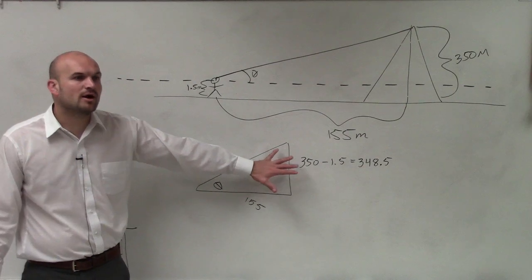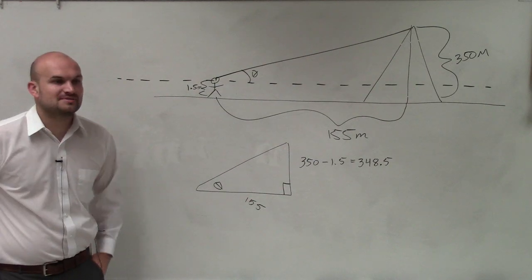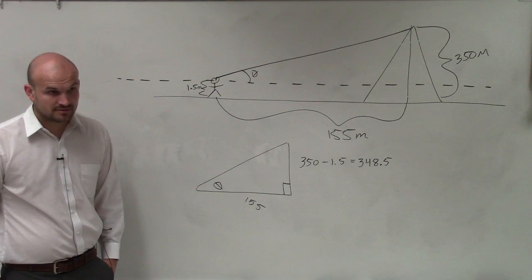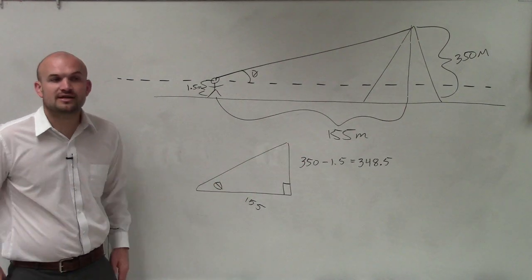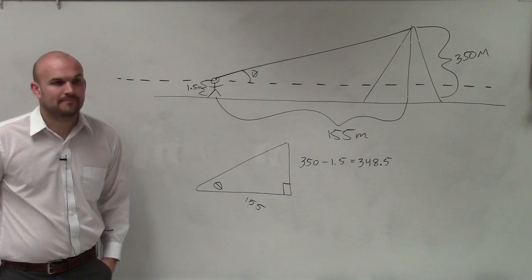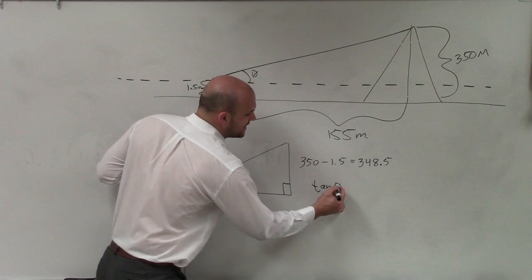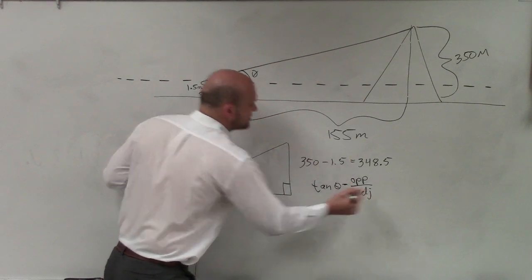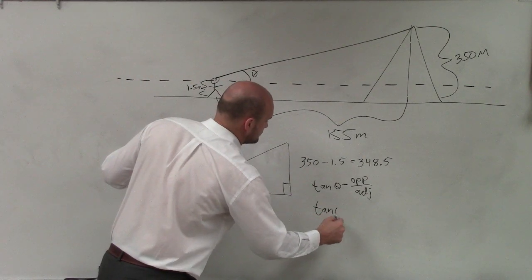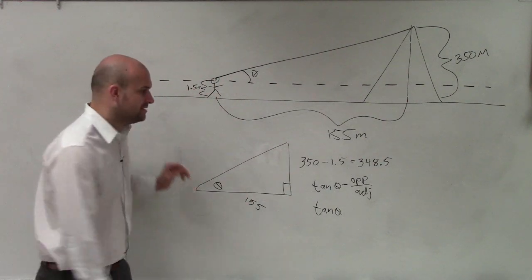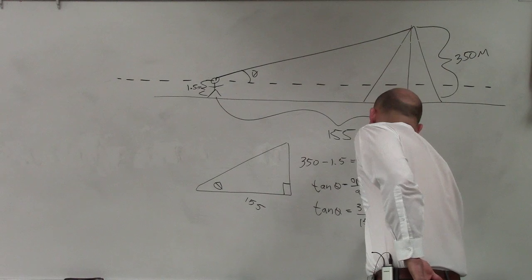Now, I look at this and I see, what are my two lengths that I have? Here's my right angle. What am I provided? The opposite, adjacent, or hypotenuse? Opposite and adjacent. So which function can I use? Tangent. Tangent of theta is opposite over adjacent. There's no hypotenuse with the tangent function.